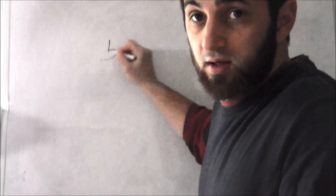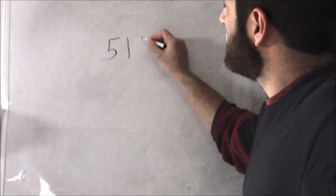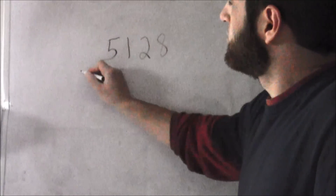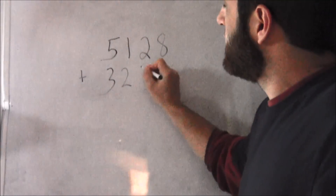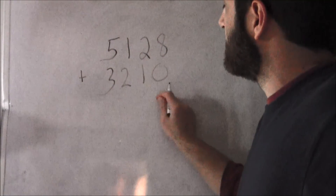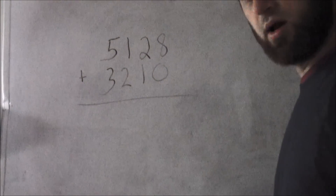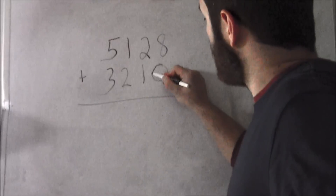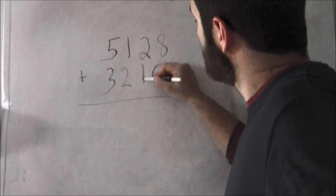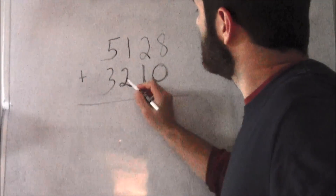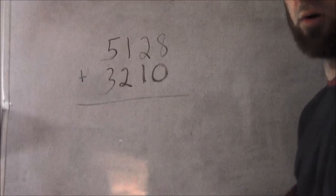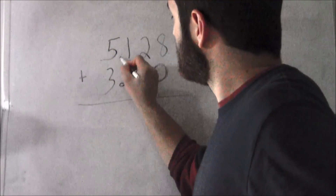Let's do some addition — a large number addition. We got five thousand one hundred and twenty eight plus three thousand two hundred and ten. All right, we got a large addition problem. I'm going to do it and try to make it a little bit darker. Three thousand two hundred ten plus five thousand one hundred and twenty eight. All right, let's get rolling.